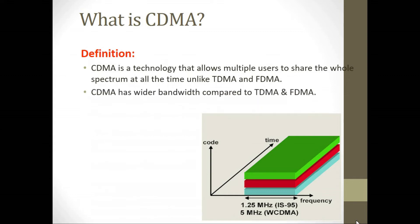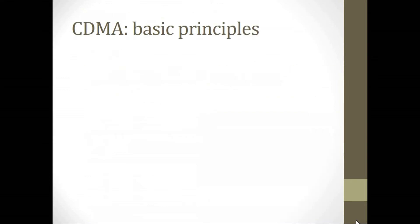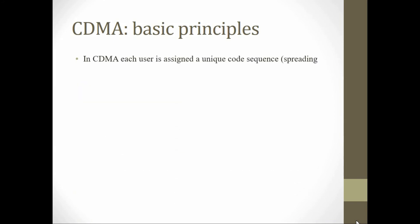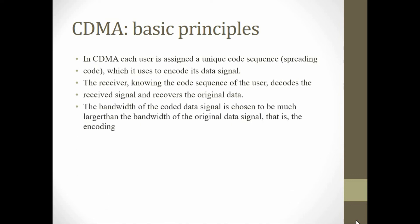CDMA has wider bandwidth compared to TDMA and FDMA and requires digital transmission. The basic principle of CDMA is that each user is assigned a unique code sequence — a spreading code — which is used to encode their digital signal. The receiver, knowing the user's code sequence, decodes the received signal and recovers the original data. The bandwidth of the coded data signal is chosen to be much larger than the bandwidth of the original digital data signal.